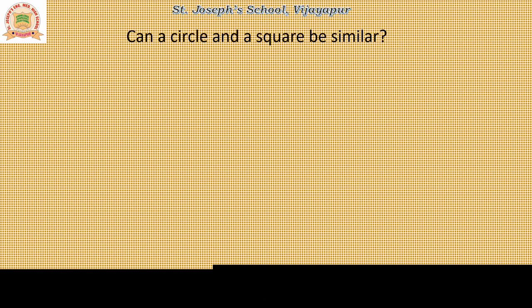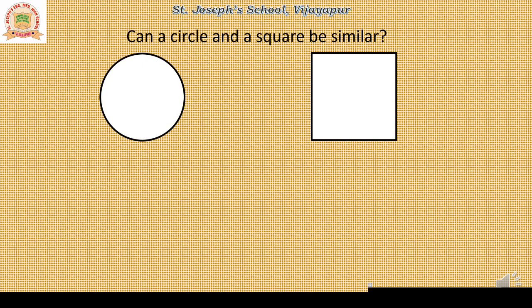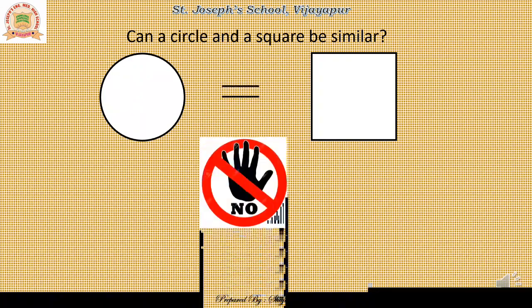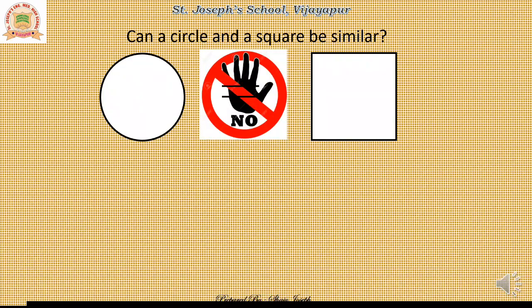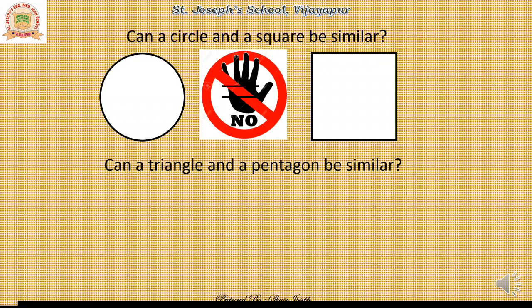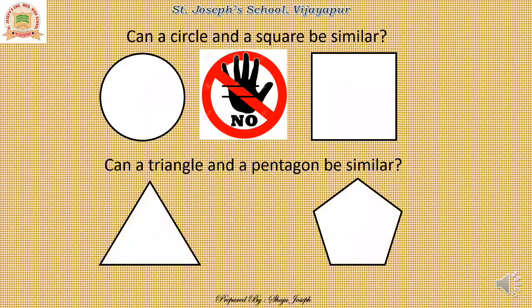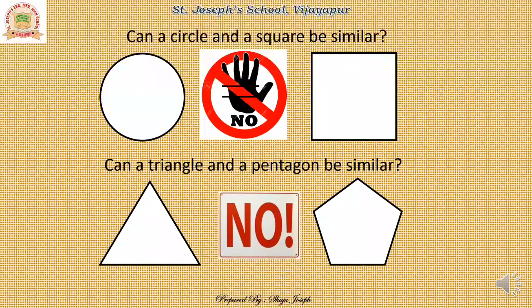Let us compare two different things like a circle and a square. Now the question is: are they similar? No, they are not. It's very evident just by looking at them — they are different. Can a triangle and a pentagon be similar? Of course not. They cannot be the same — the shapes are totally different.